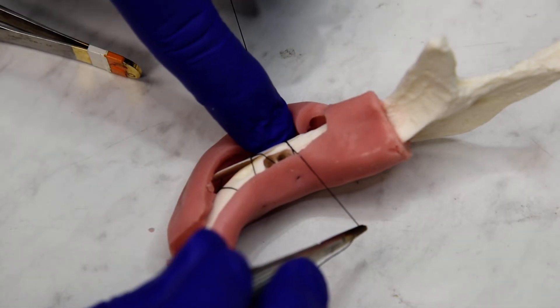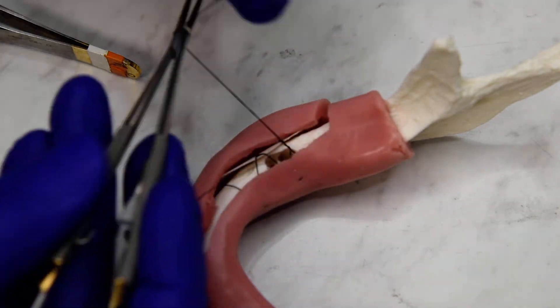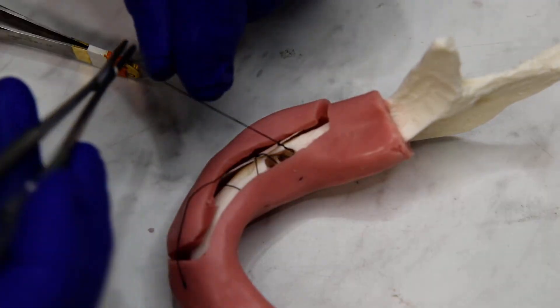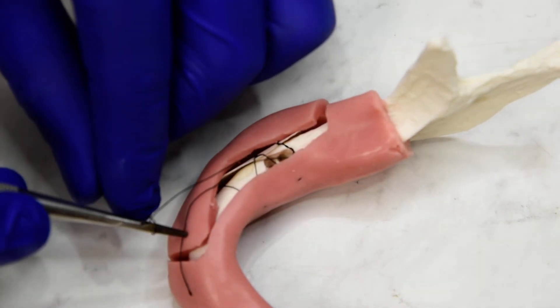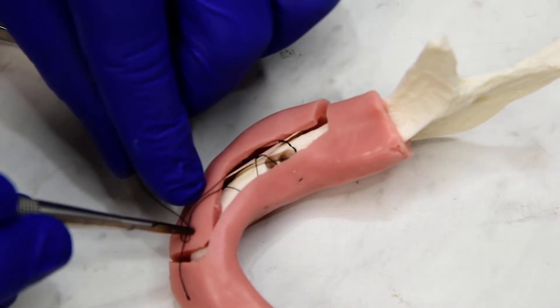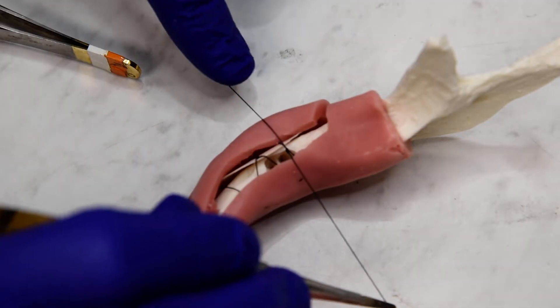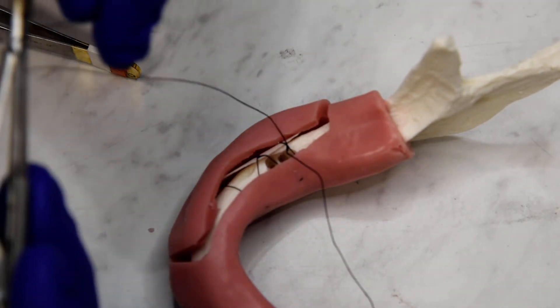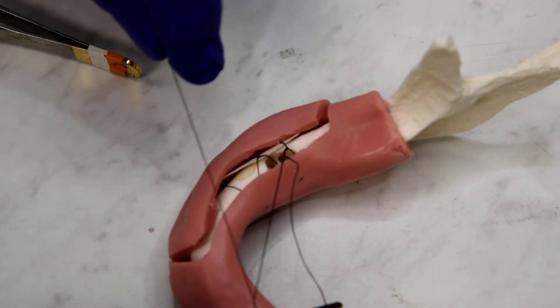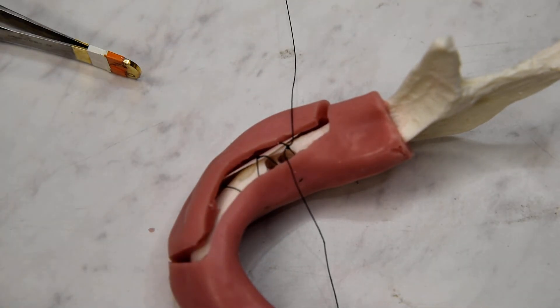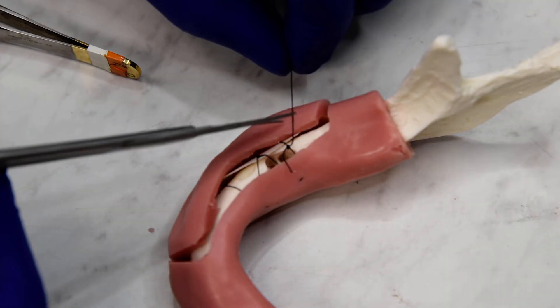And this knot will also be thrown under the front flap. So the only thing that will be exposed is the two lingual loops. We'll cut our tail now.